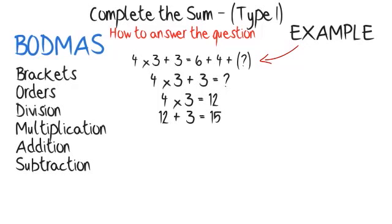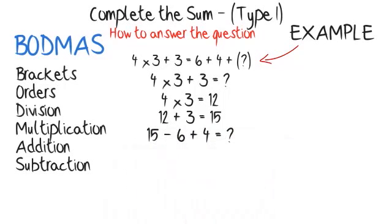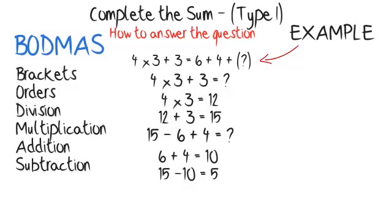So now we know that the sum on the right-hand side of the equation will also need to equal 15. To find the missing number, all we have to do is 15 subtract (6 plus 4). Using BODMAS, answer the addition first: 6 plus 4 equals 10, then 15 minus 10 equals 5.